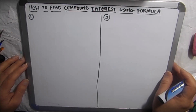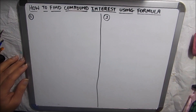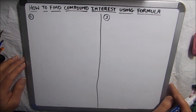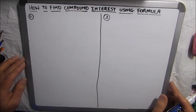Hello viewers, today we are going to learn how to find compound interest using a formula. We have already learned simple interest. The difference between compound interest and simple interest is that in simple interest the principal amount remains the same, while in compound interest the principal amount gets changed every year. For example, for one year the interest will be 100, then that interest gets added for the next year, and so on.